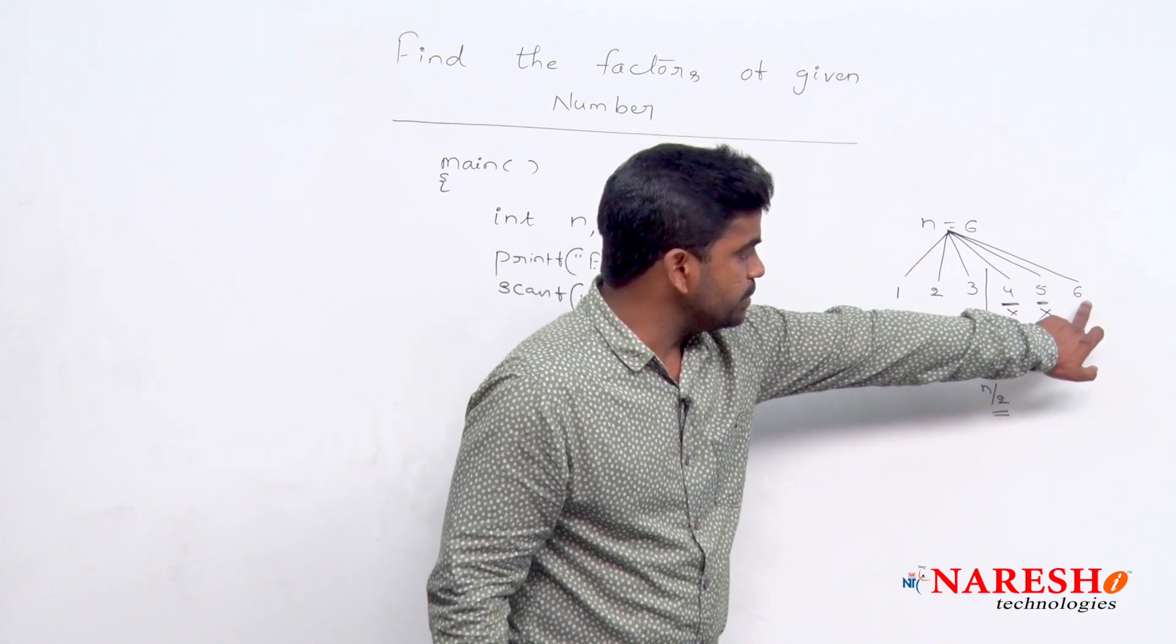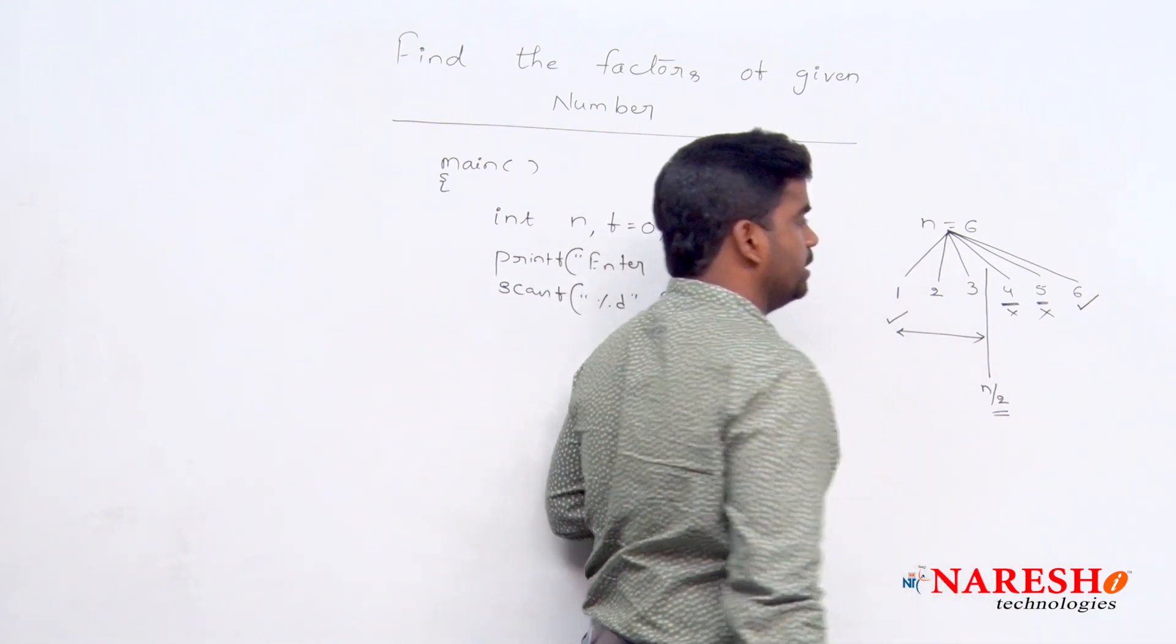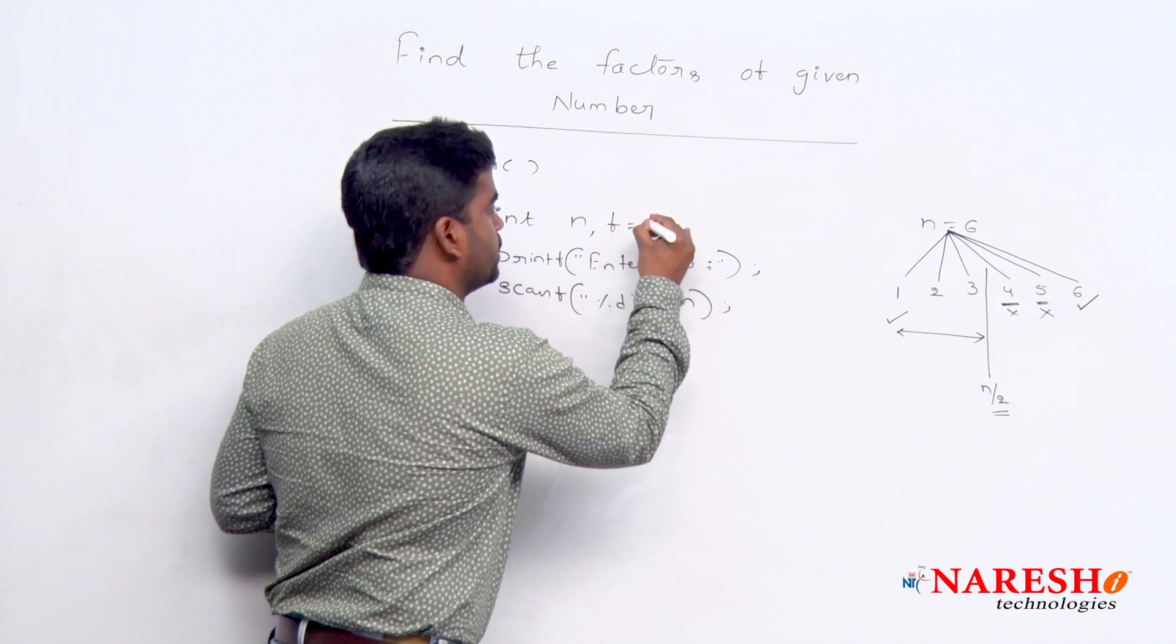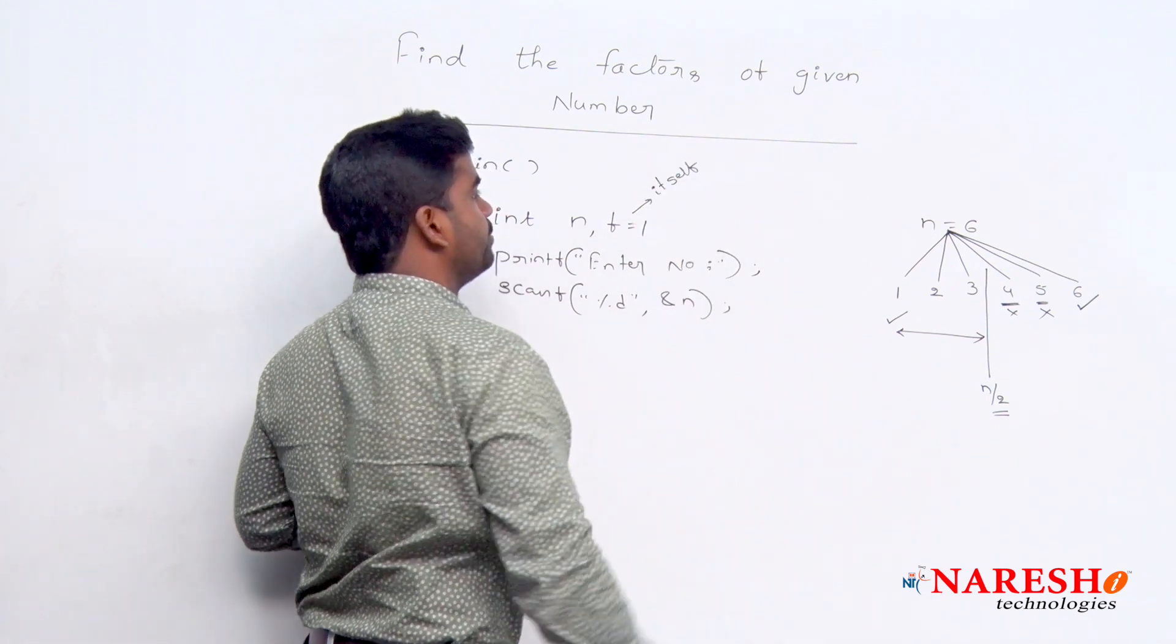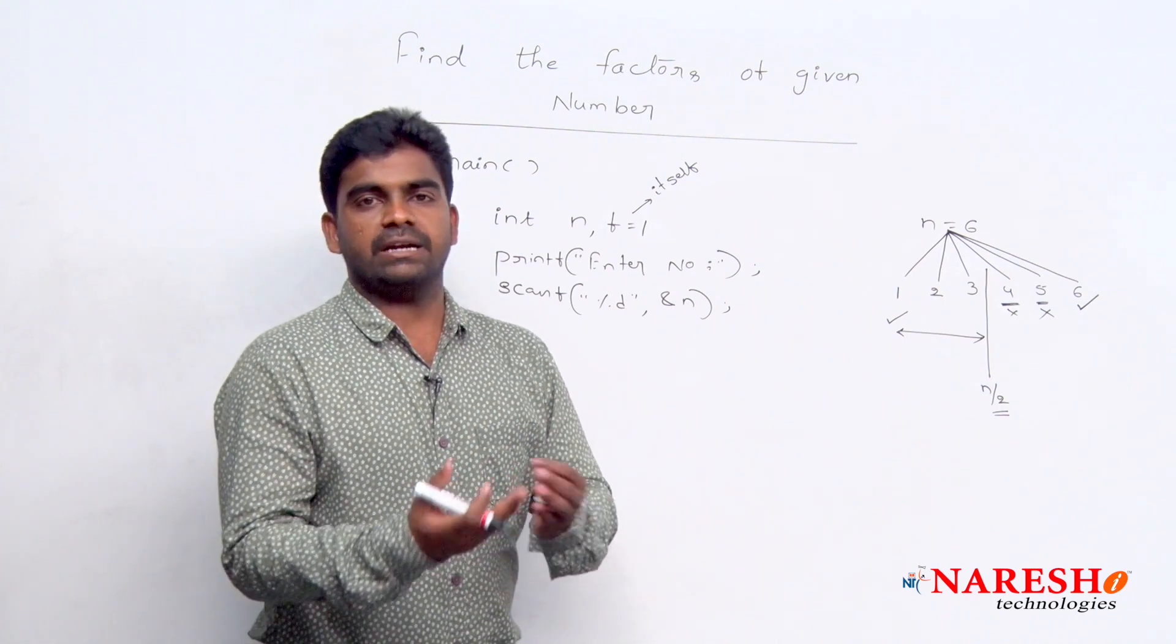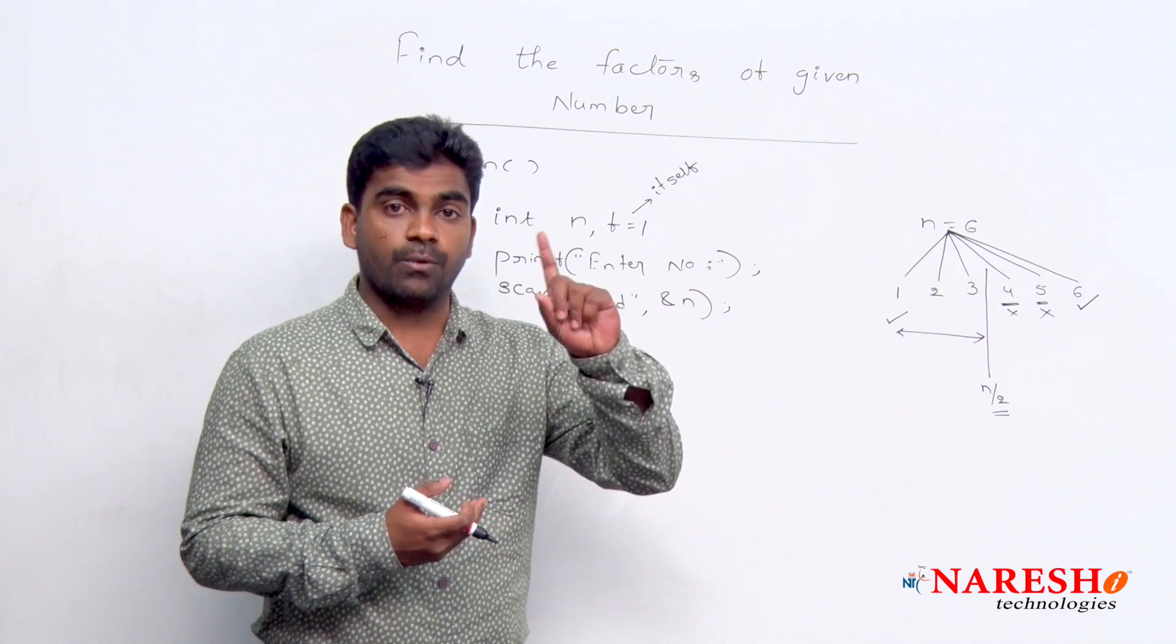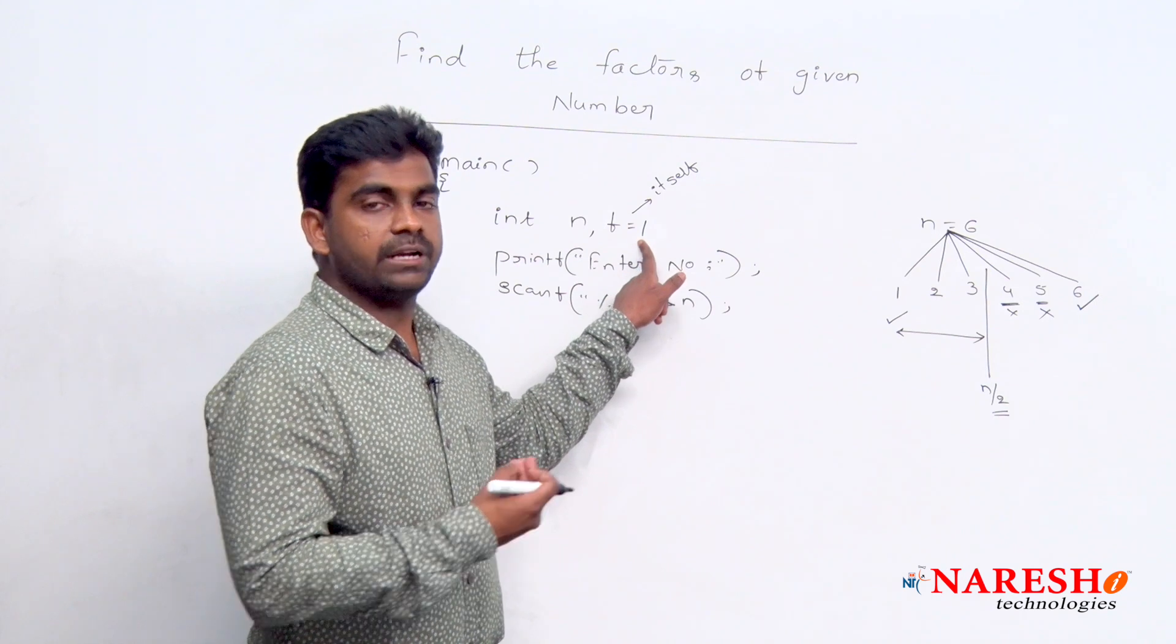But here the last one is there, the last one also we are counting first. This is for itself. Itself anyway is the factor. For 1, 1 is the factor. For 17, 17 is one factor. For 10, 10 is one factor. That one factor is what, this one already we considered.